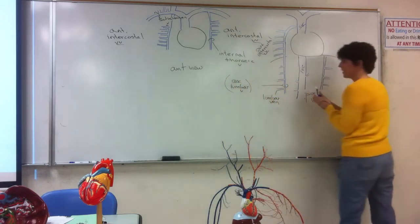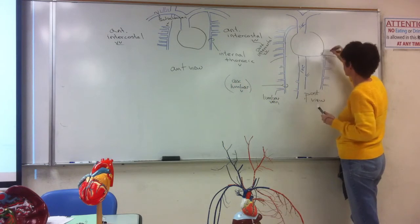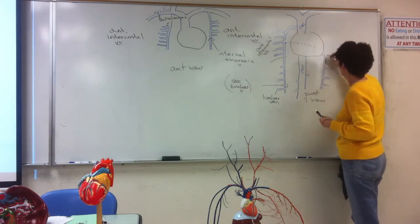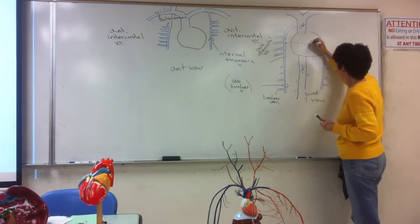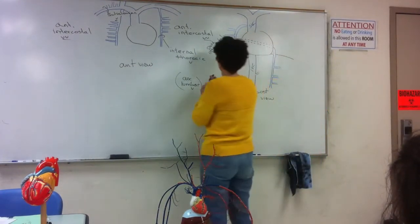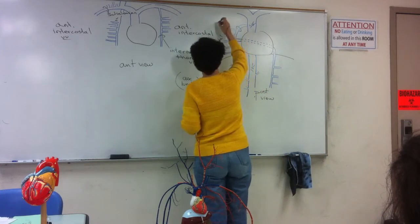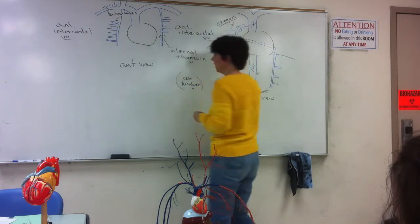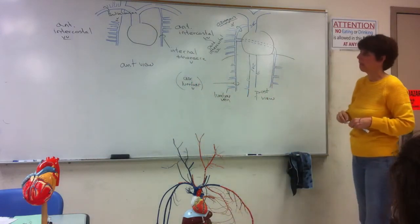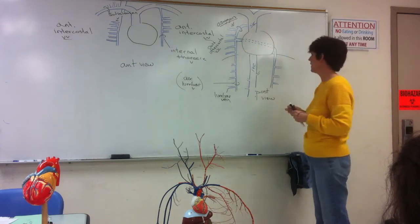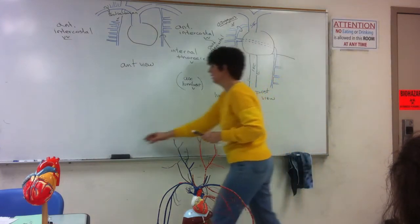On the left side, this ascending lumbar reaches the thoracic area, crosses over behind the heart, and drains into this vessel which in the chest wall is identified as the azygos. On the right side it's the azygos — let me make this a little bit higher here.